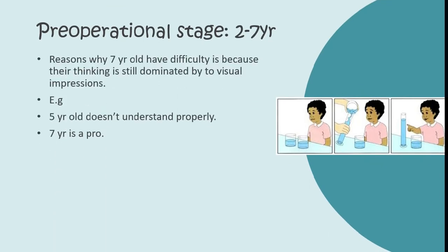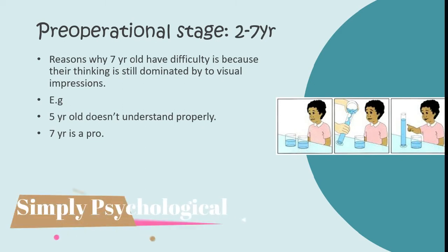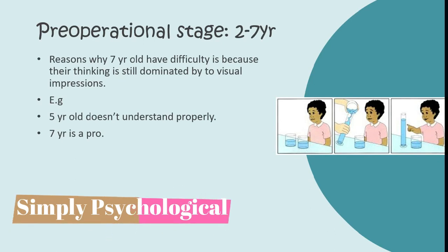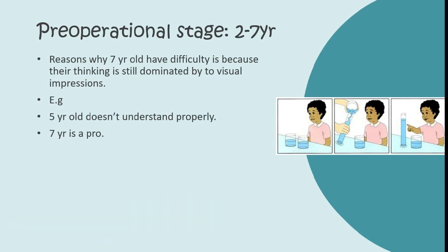Another experiment involved conservation of weight, in which a child was shown a circular ball and a sausage shape and asked which one is heavier. The same type of study can be done by placing both on a scale. Conservation of weight is more difficult for a child to understand than conservation of mass.